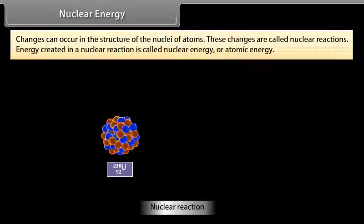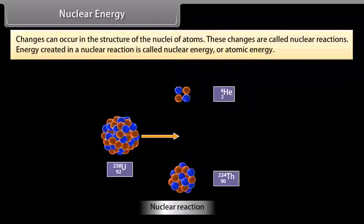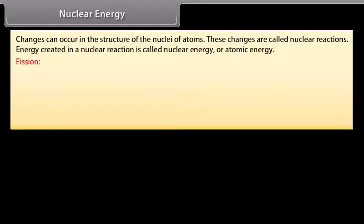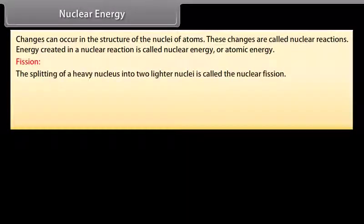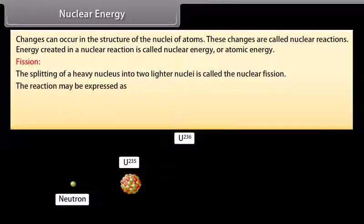Nuclear energy. Changes can occur in the structure of the nuclei of atoms. These changes are called nuclear reactions. Energy created in a nuclear reaction is called nuclear energy or atomic energy. Fission. The splitting of a heavy nucleus into two lighter nuclei is called the nuclear fission. When a slow neutron strikes a uranium 235 nucleus, it is absorbed by the nucleus and an unstable isotope of uranium U236 is formed, which immediately breaks into two fragments, emitting two or three neutrons with release of enormous amount of energy.